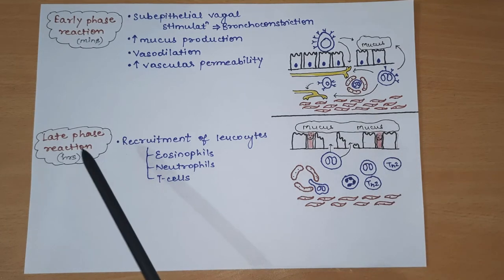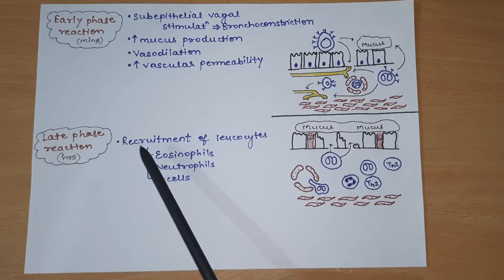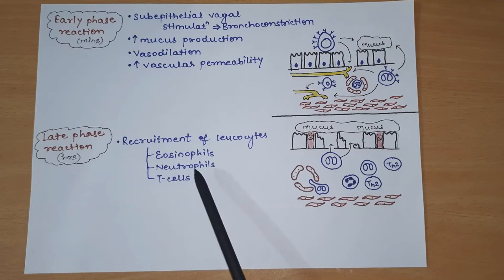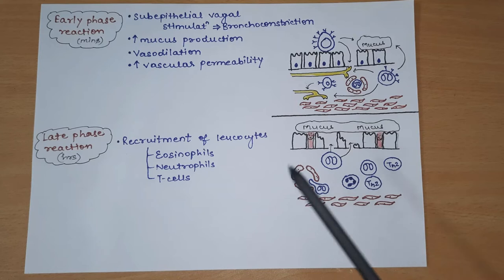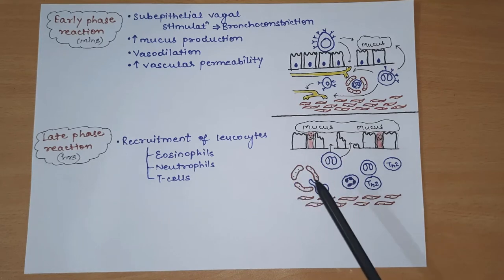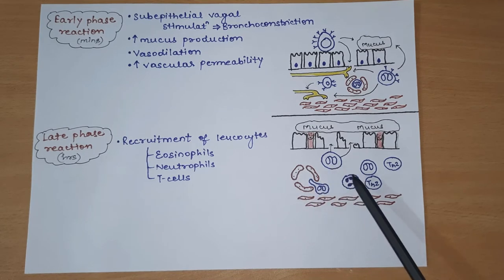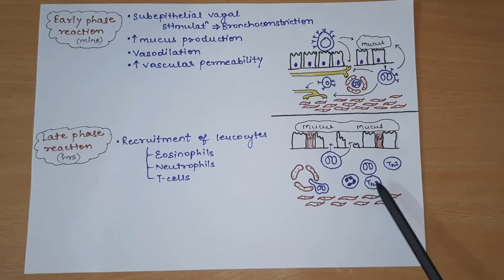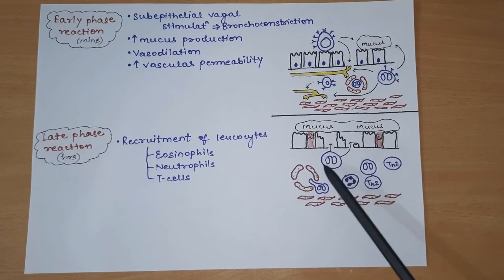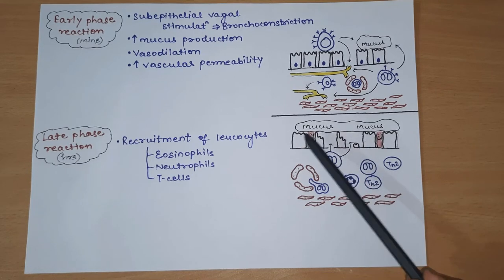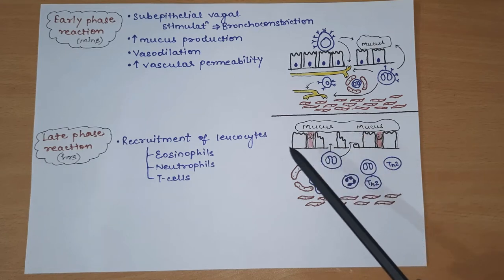The late phase reaction, seen hours after degranulation, mainly involves recruitment of leukocytes - mainly eosinophils, neutrophils, and T-cells - which occurs hours after degranulation. These leukocytes come out from blood vessels; among these, eosinophils mostly move towards the airway lumen. The TH2 cells are the main T-cells recruited. So this was the early phase reaction and late phase reaction.